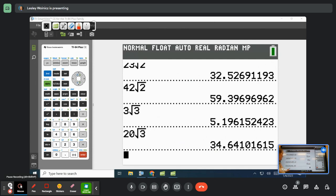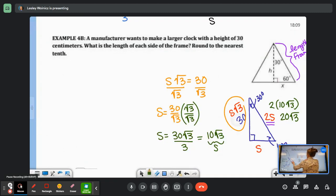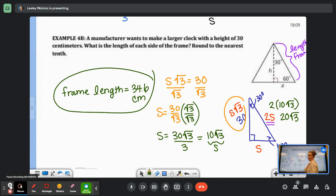If I'm rounding to the nearest tenth, I put in 20√3. So that would be 34.6. So my frame length equals 34.6 centimeters. Don't forget your units. Okay, all done. All done.